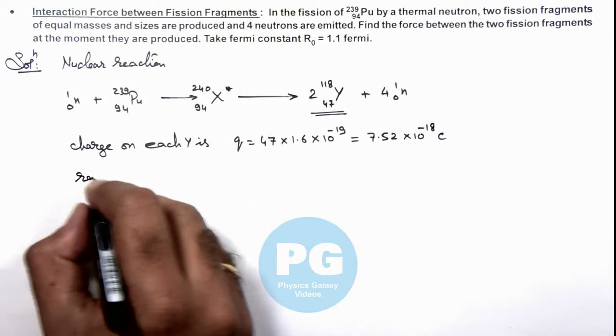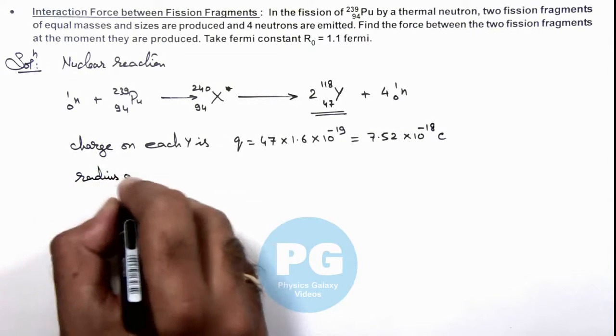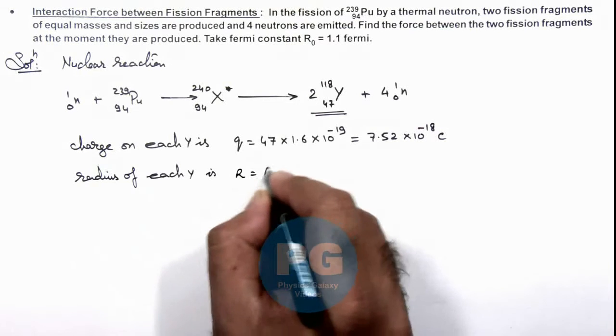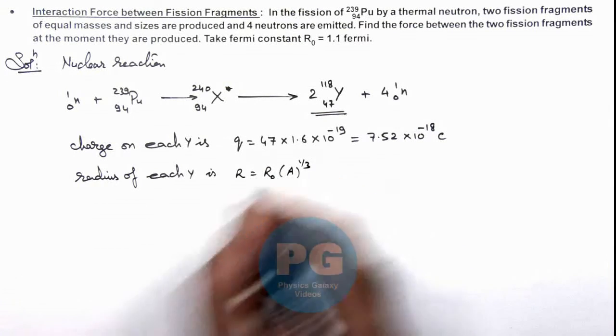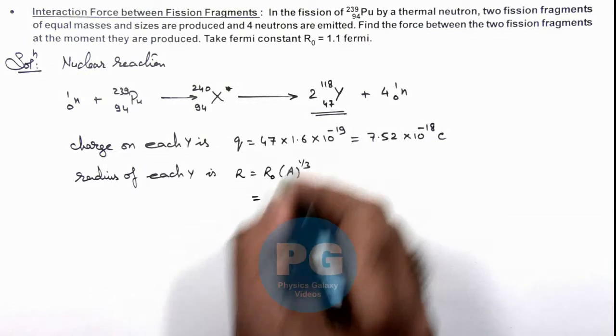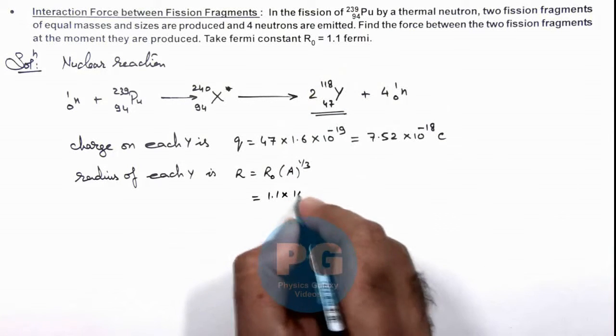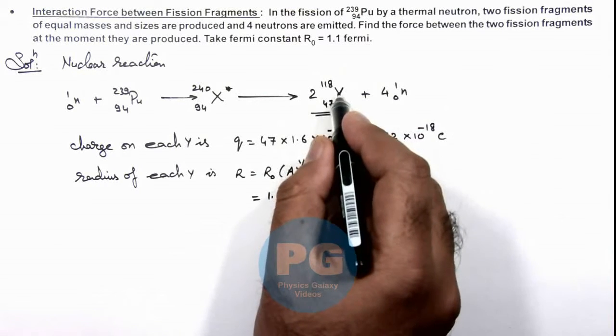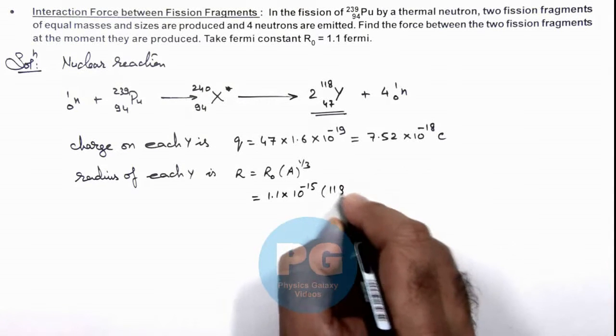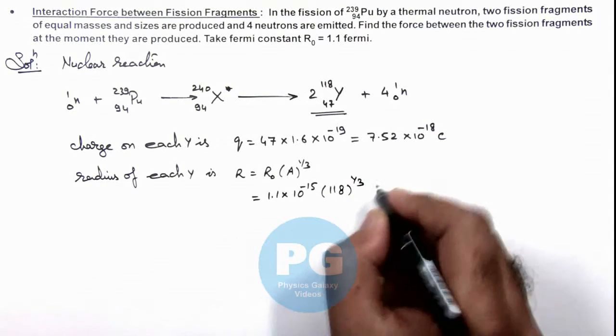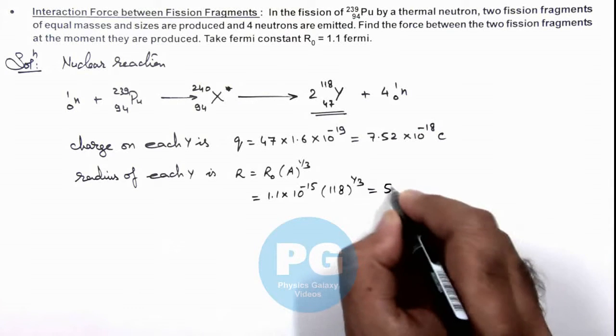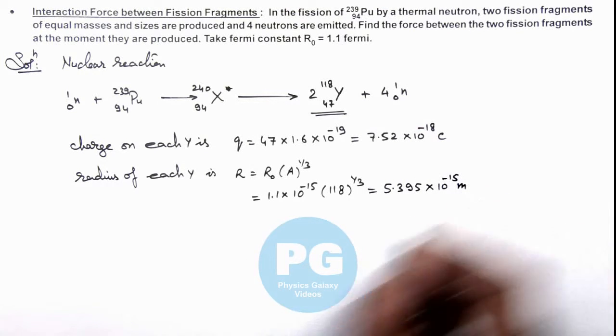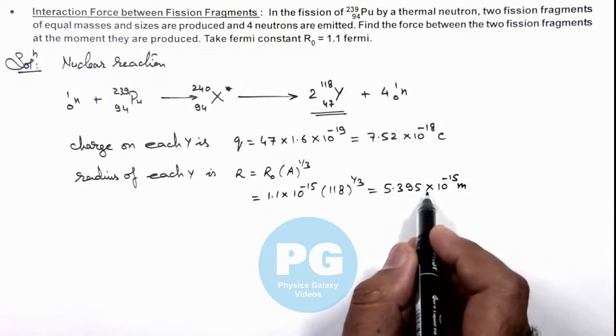We can also calculate the radius of each Y, which can be given as R is equal to R₀ times A to power 1 by 3. And the value of R₀ we are provided with 1.1 into 10 to power minus 15, multiplied by the atomic mass number of Y we can take as 118 to power 1 by 3. On simplifying, this will give us a value 5.395 into 10 to power minus 15 meter. So we have the radius of Y and the charge on Y.